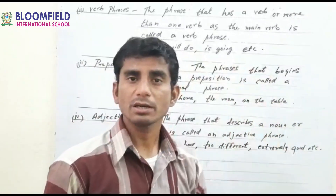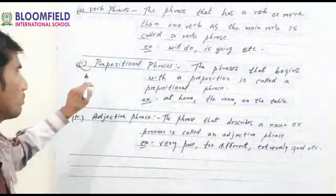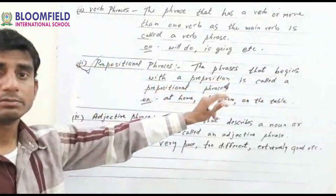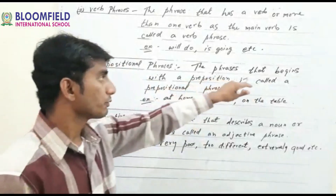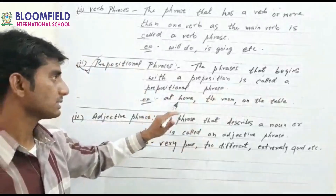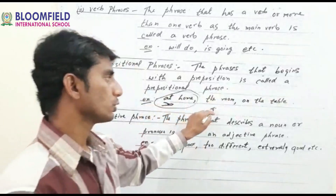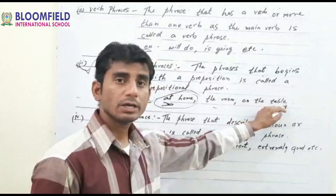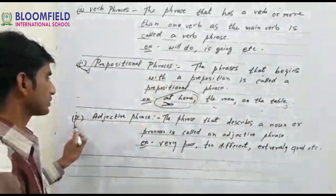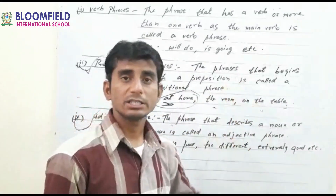Next is prepositional phrase. The phrase that begins with a preposition is called a prepositional phrase — this is very easy guys. Examples: at home — 'at' is the preposition here; in the room; on the table. So these are the examples of prepositional phrases.